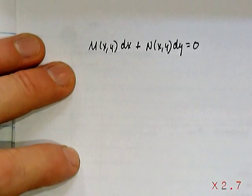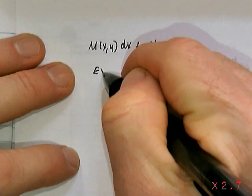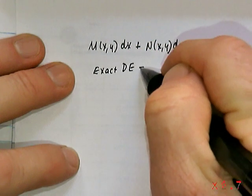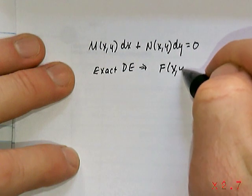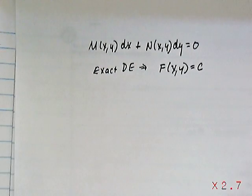If that is an exact differential equation, that means there is a solution of the form F(x,y) equal to a constant, so that would be an implicit solution to this particular differential equation.